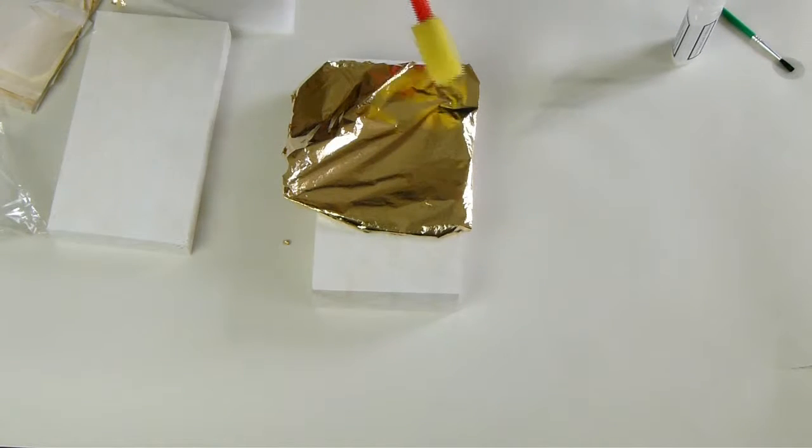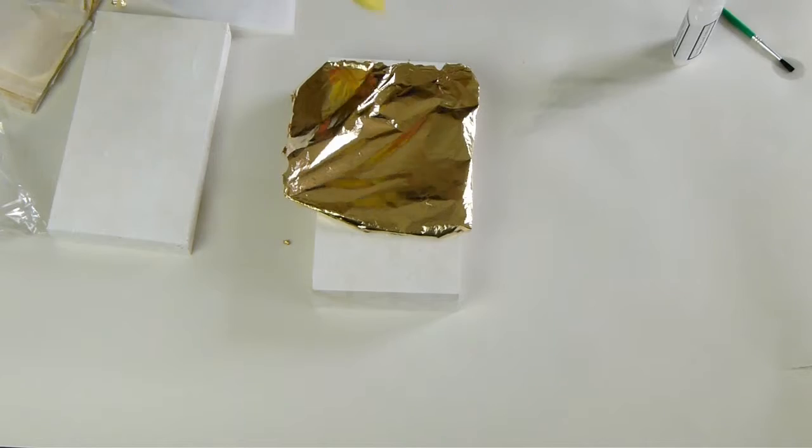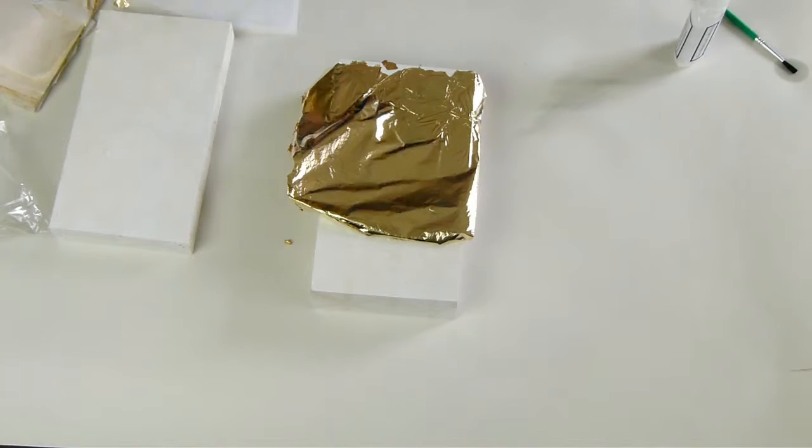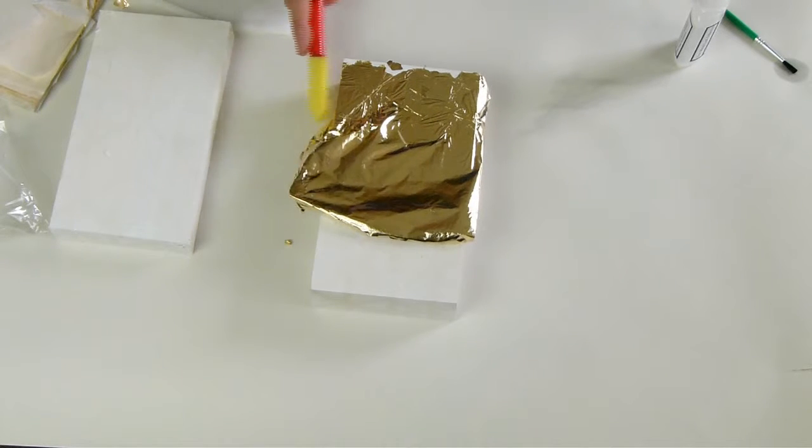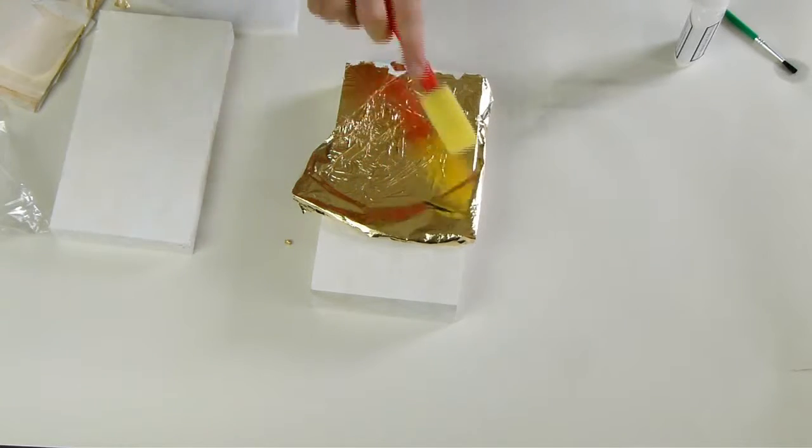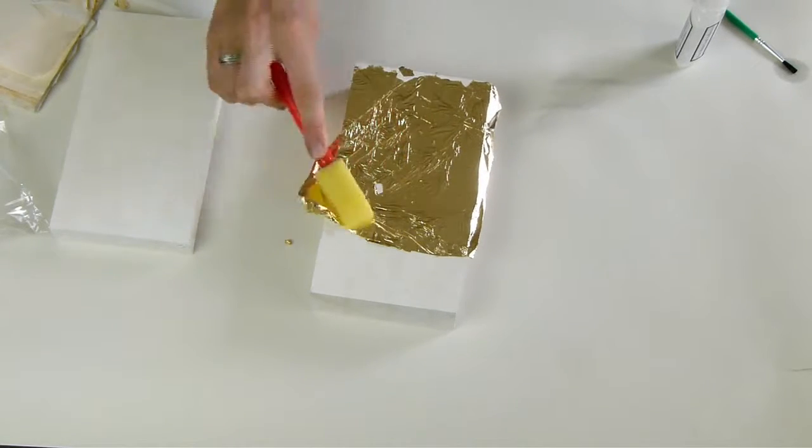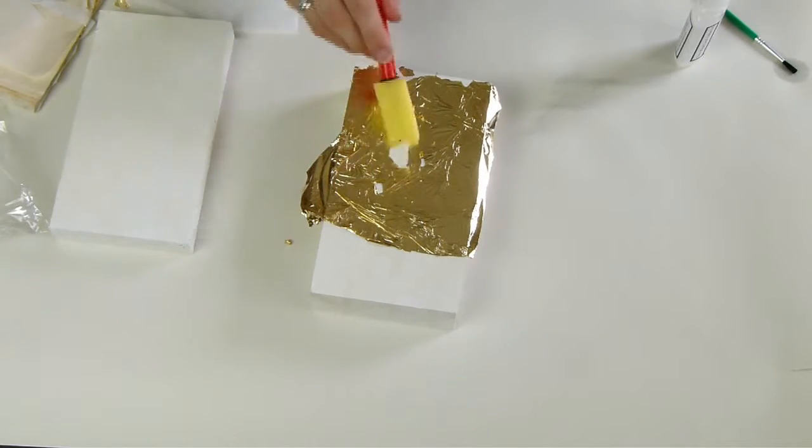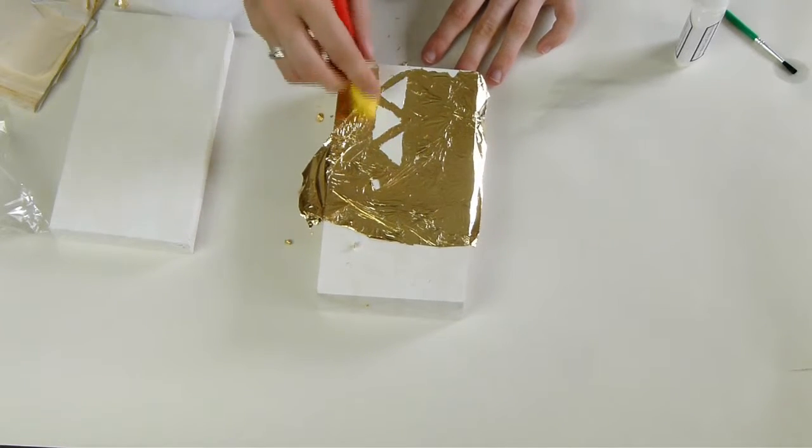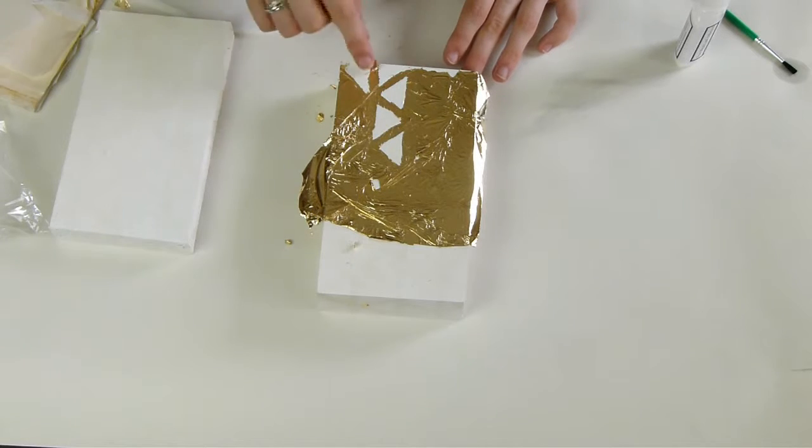Once that's dry, you want to grab your gold leaf and tap it down with either a piece of paper on top of it or a foam brush. Once you completely tap down the leaf onto the glued lines, you can then use the same sponge just to rub away all of the excess to reveal your pattern.